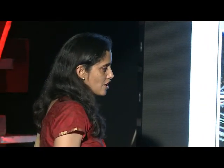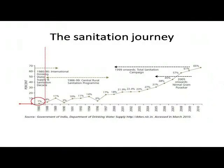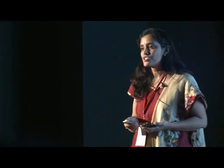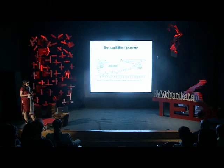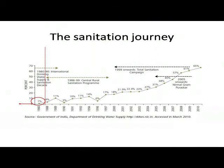This has been a problem for a long time. Let's look at the sanitation journey in the country. Before the 1980s, there was no budget for sanitation — no allocation in the national budget for the first five-year plans. Between 1980 to 1990, we had the international decade for drinking water and sanitation, and that's when the Government of India's program started. At that time, the access to toilets in the country was just 1% — 1% of the whole country.